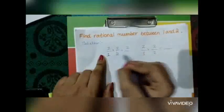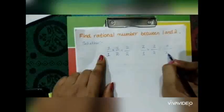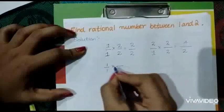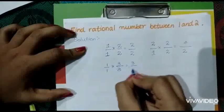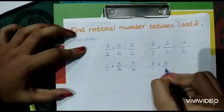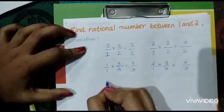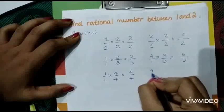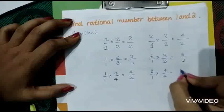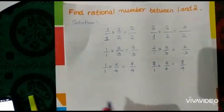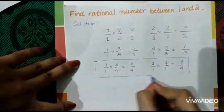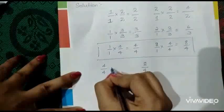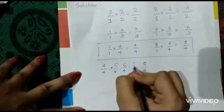2 into 1 is 2, 2 into 1 is 2, giving 2/2. Then 2 into 2 is 4, 2 into 1 is 2, giving 4/2. We can also multiply with 3: 2/1 × 3/3 = 6/3, and 1/1 × 4/4 = 4/4, and 2/1 × 4/4 = 8/4. Taking 4/4 and 8/4, the numbers between them are 5/4, 6/4, 7/4.